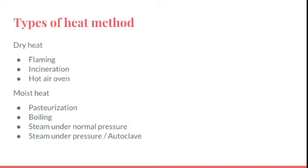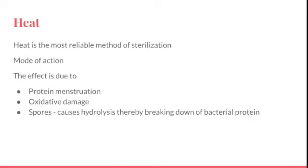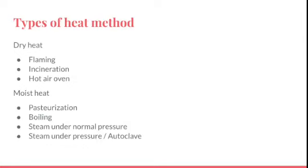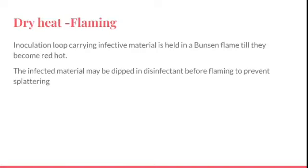Heat methods are of two types: dry heat and moist heat. Under dry heat, we have flaming, incineration, and hot air oven. Flaming means placing an object directly under a flame — for example, sterilizing an inoculation loop by holding it in a Bunsen flame until it becomes red hot.